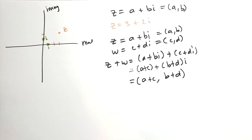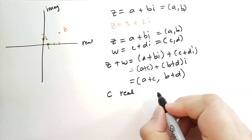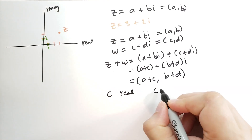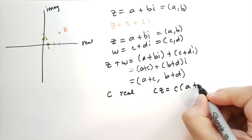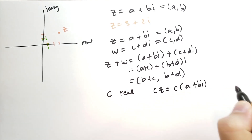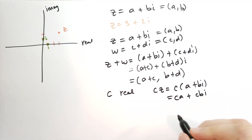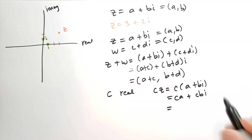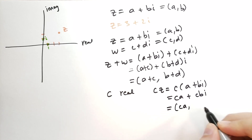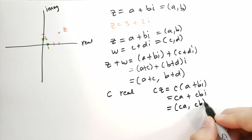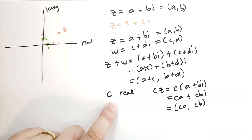We also have: if we have a real number C and we multiply Z by C, so we take C times Z, what does that do? You're going to have C times A plus Bi, which gives you CA plus CBi. In terms of a point in the complex plane, that's just CA comma CB — so that's scaling the point out by a factor of C when C is real.